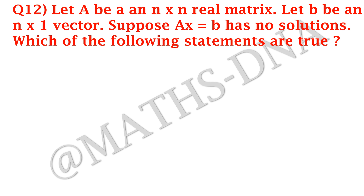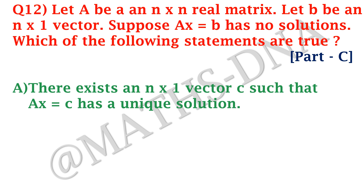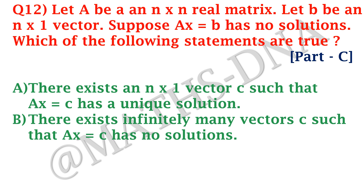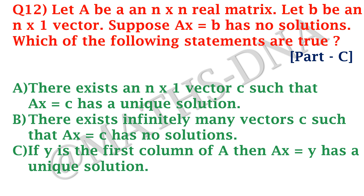Question 2: Let A be an n×n real matrix and B an n×1 vector. Suppose AX = B has no solutions. Which of the following are true? Option A: there exists an n×1 vector C such that AX = C has a unique solution. Option B: there exist infinitely many vectors C such that AX = C has no solutions. Option C: if Y is the first column of A, then AX = Y has a unique solution. Option D: det(A) = 0.